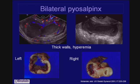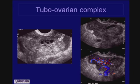Here are examples of bilateral piosalpinx — one with hyperemia in the color showing the thickened wall. These are the pathology specimens of these thick-walled tubes, which were filled with pus in this patient who had a total abdominal hysterectomy and salpingo-oophorectomy.